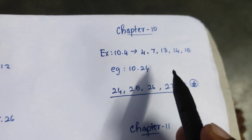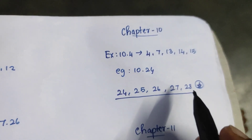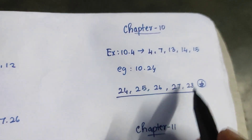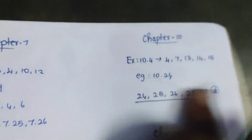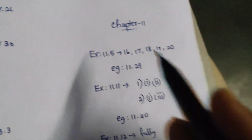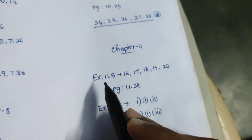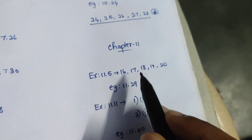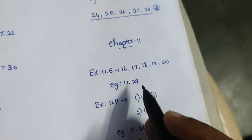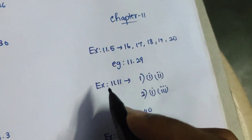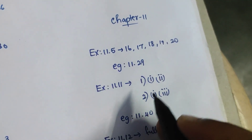Example 10.24, 24, 25, 26, 27 — very important. Let's look at Chapter 11. Exercise 11.5: 16, 17, 18, 19, 20. Example 11.29. Example 11.1, 1.2.